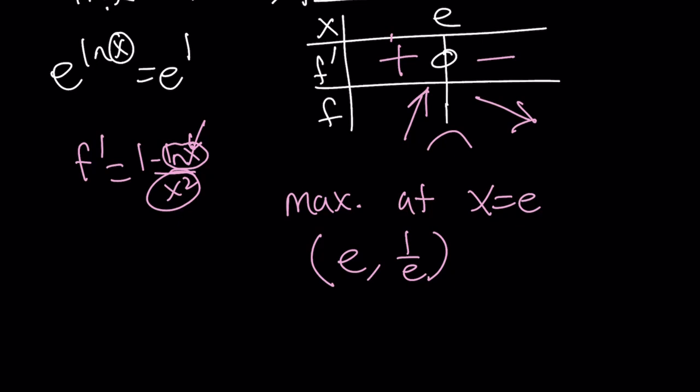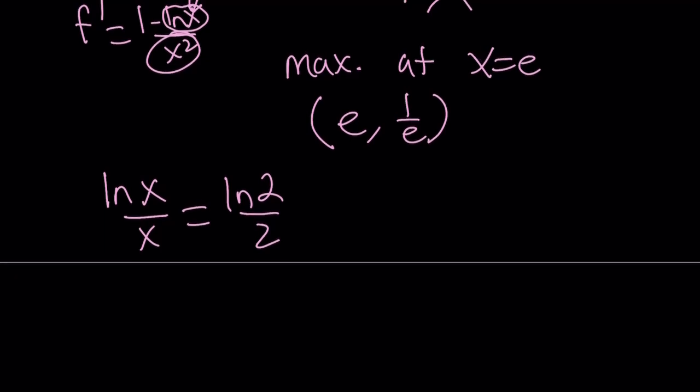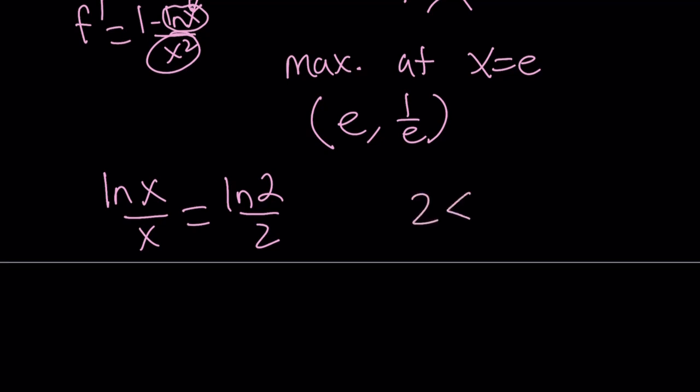And also, notice that we are trying to solve the following equation: ln x over x is equal to ln 2 over 2. We say that x equals 2 is a solution, but is that the only solution? And how can we tell? So, here's what we can do. First of all, notice that 2 is less than e. So, if the line, if we have an intersection point at x equals 2, and we have a curve that is increasing first and then decreasing.